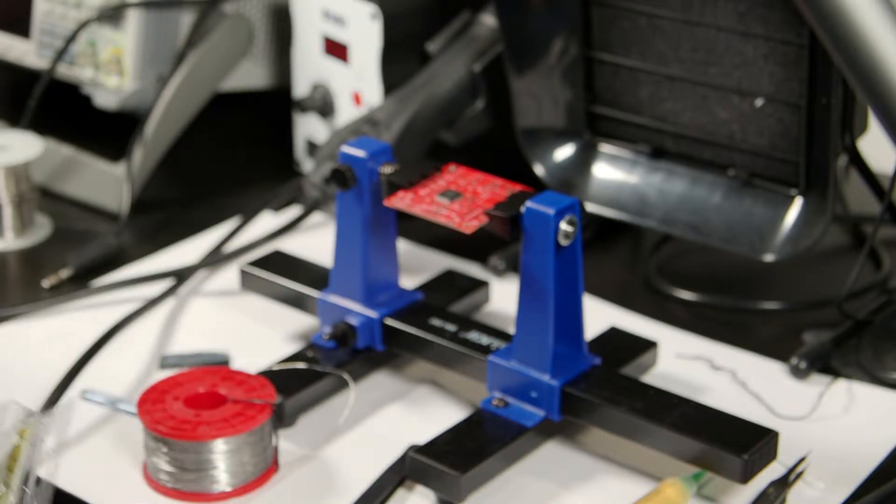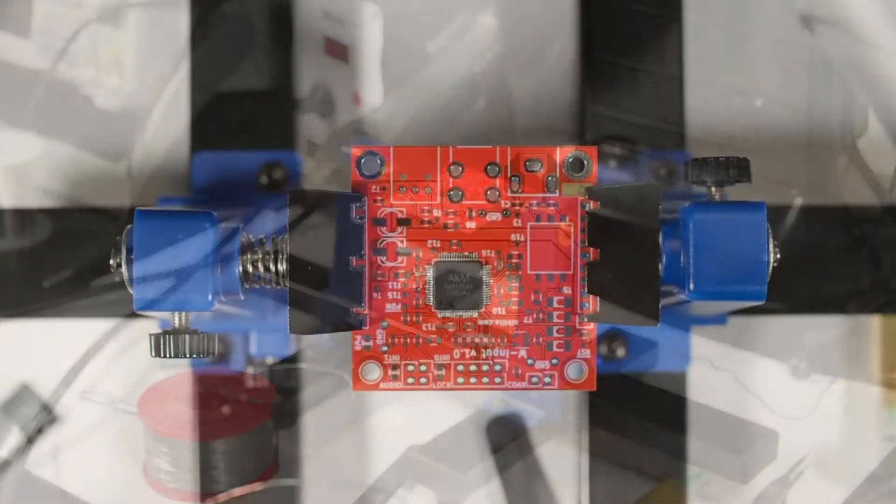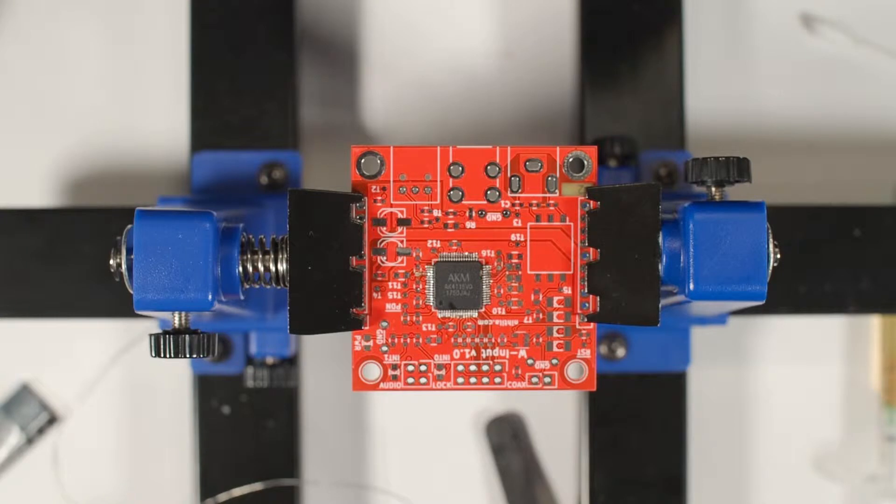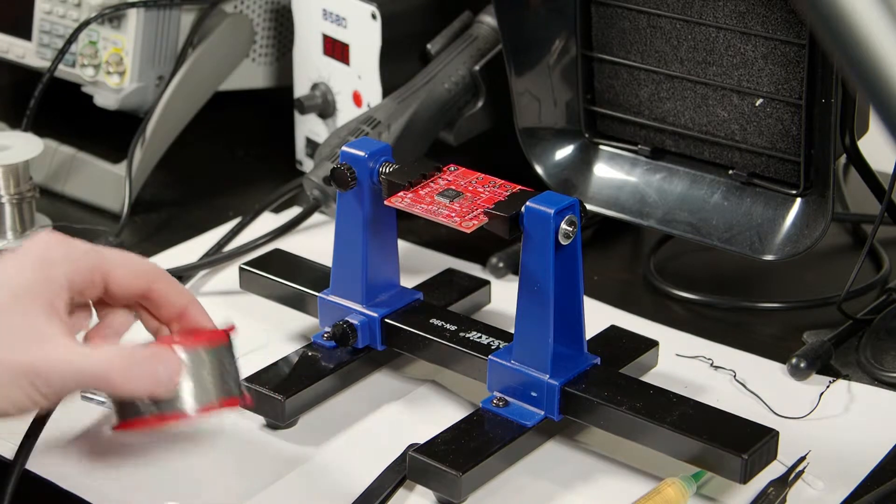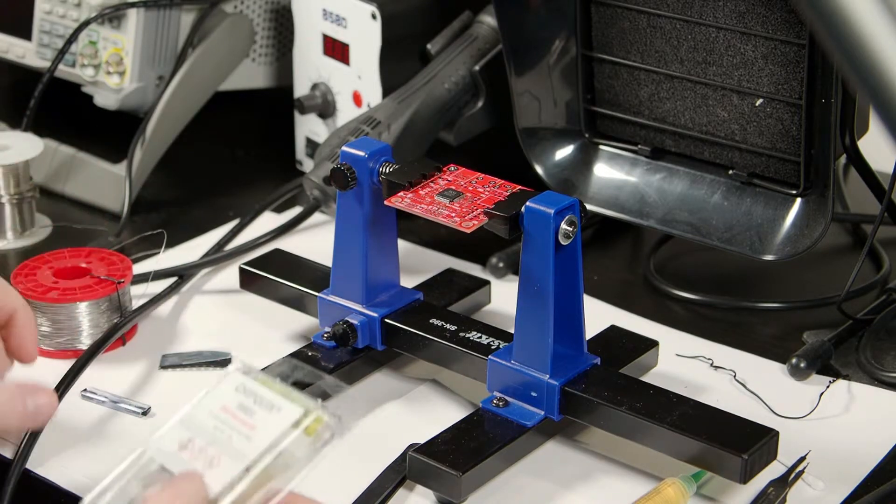So hot air is always an option to desolder stuff, it can be a bit tricky especially if you have a lot of components on the board so you're gonna desolder everything.